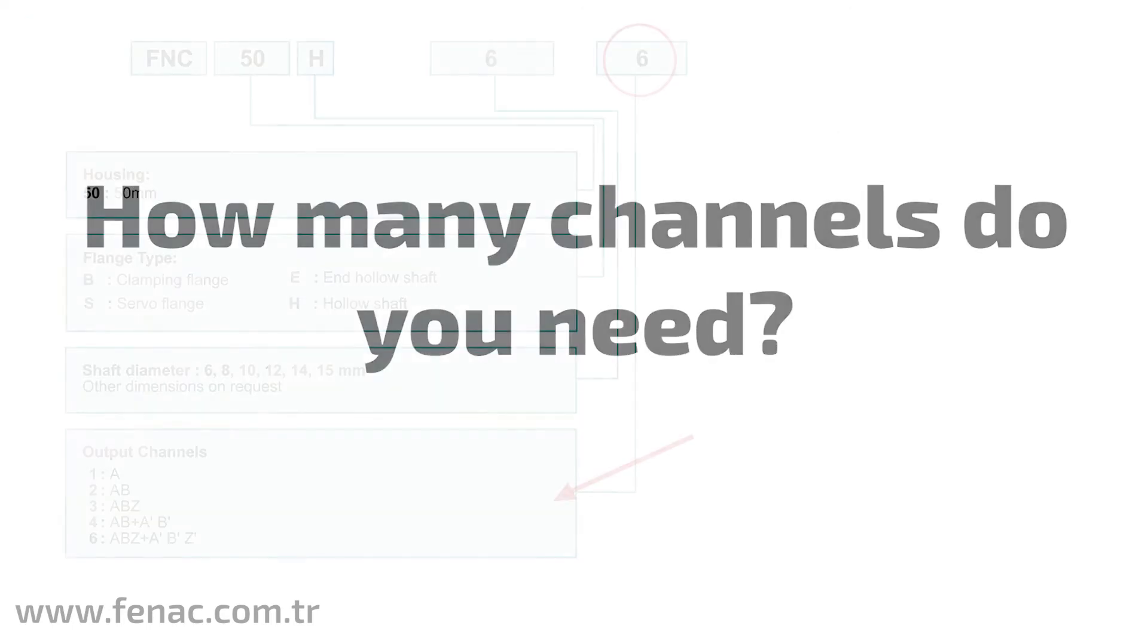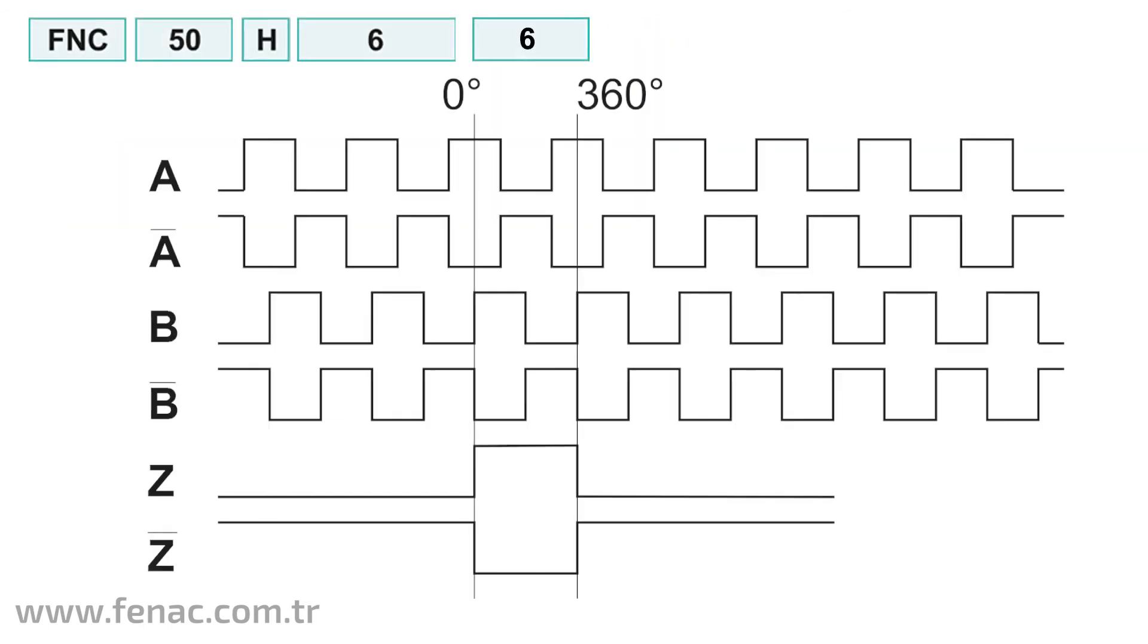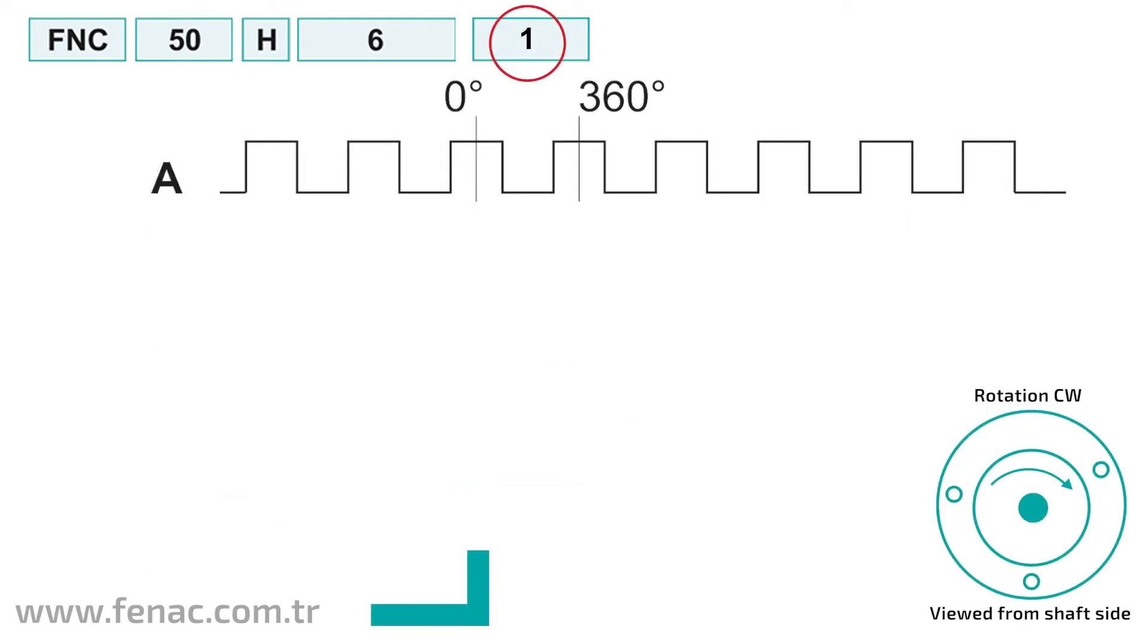How many channels do you need? The encoder can have six channels in total: A, B, Z, and inverted signals. If we take a 1024 PPR product as an example, if you want to reach 1024 pulses in just one turn or if you want to measure speed, a product with one output can be selected.